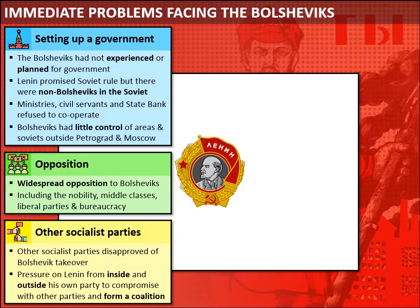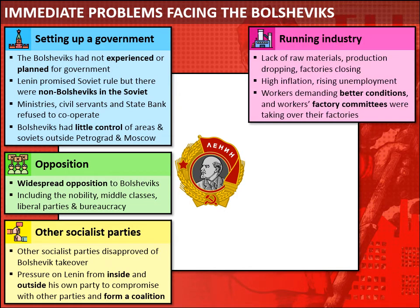Another serious challenge was the running of industry. The problems stemmed from the upheaval of the war effort, which had a devastating impact on the Russian economy. Russian industries were suffering shortages of raw materials, production was dropping, factories were closing, resulting in high inflation and rising unemployment. It also resulted in increasing antagonism between workers and their bosses, and in many factories workers had already formed committees and were taking control, forcing management out.